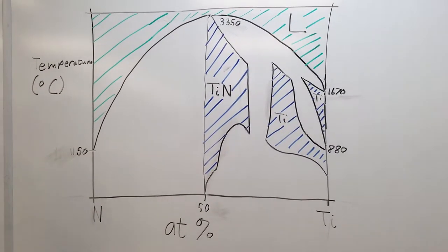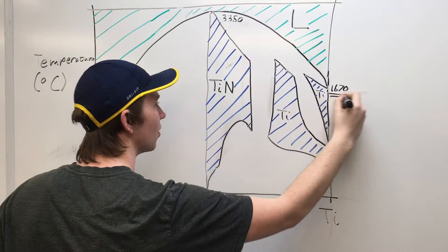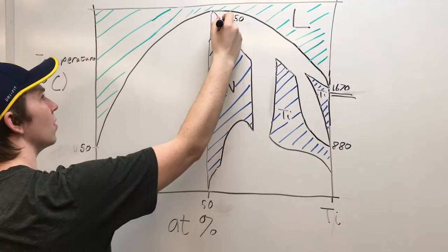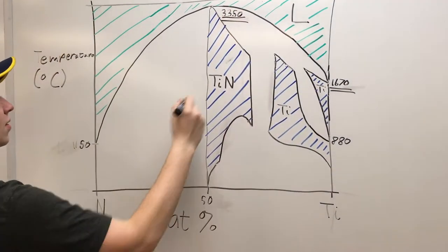On its own, titanium has a melting point of 1,670 degrees Celsius. However, when it is combined with nitrogen, they can form a phase with a melting point of 3,350 degrees Celsius.